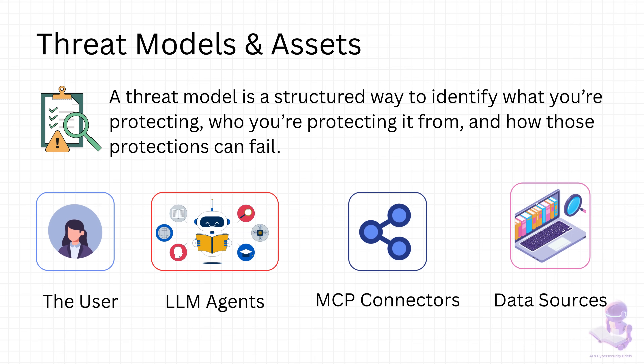And finally, the data sources — whether it's financial records, medical information, or code repositories. This is the crown jewel the assistant is trying to use. Protecting the integrity and confidentiality of data is central to MCP security. So when we threat model MCP, these four assets — the user, the agent, the connectors, and the data — are the foundation for identifying where the risks live.